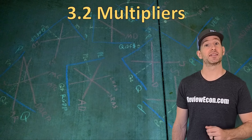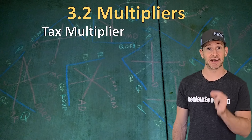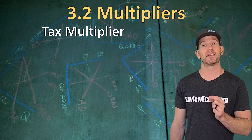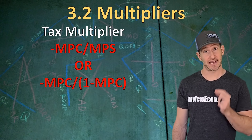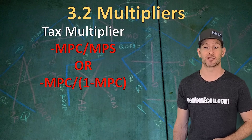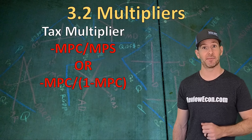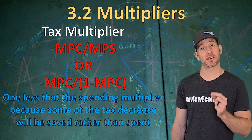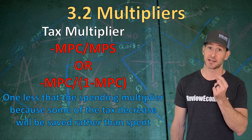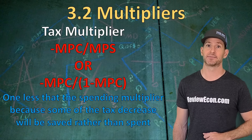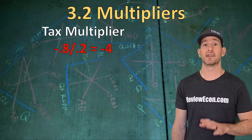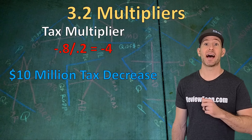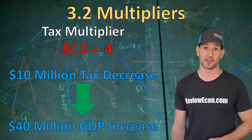There is another multiplier you need to know called the tax multiplier. When the government increases or decreases taxes, it changes the amount of disposable income consumers have, and that will also ripple through the economy in the same multiplier effect. The tax multiplier is found by taking the negative of the marginal propensity to consume divided by the marginal propensity to save, or negative MPC divided by 1 minus MPC. The tax multiplier has an absolute value that is one less than the spending multiplier, because when the government decreases our taxes, some of that money will be saved rather than spent. In our example, the tax multiplier is negative 0.8 divided by 0.2, giving us negative 4. If the government decreases taxes by $10 million, that will cause a maximum $40 million increase in GDP.